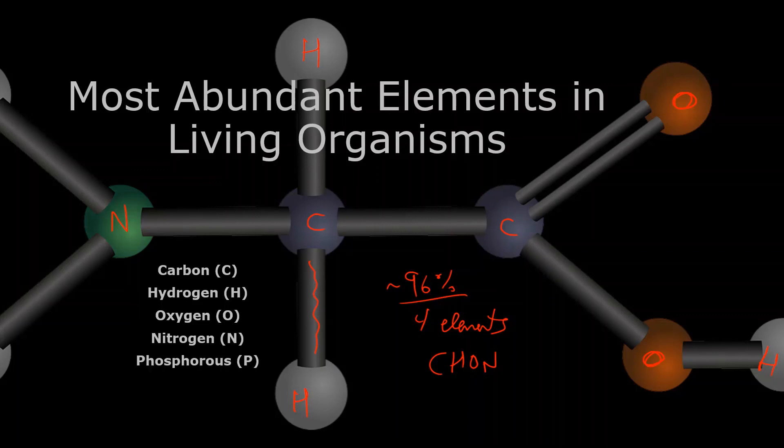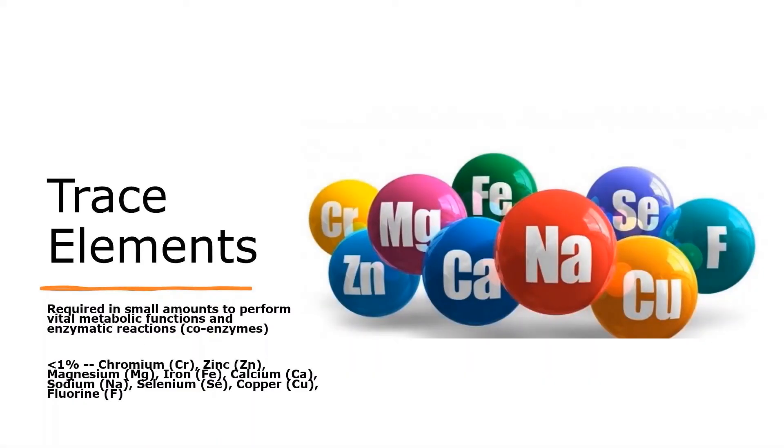So Chon would represent the top four elements that make up life. If you added the fifth one here, phosphorus, which isn't shown in this molecule, but phosphorus would be the fifth one. So it would spell chomp. Okay, there are some other elements that are required to perform vital metabolic functions, some sorts of chemical reactions, maybe acting as coenzymes. We only need these in small amounts to perform very specific functions. So if you could say chon, chomp makes 96, 98 maybe percent, these here would represent the other missing percentages. These are what we call trace elements. You don't need very much of them. You just need trace amounts.